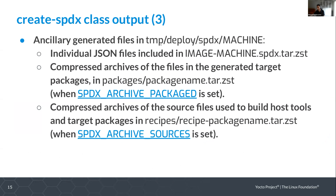There's also a second set of files generated in tmp/deploy/spdx/machine. Initially I thought these were the primary ones, but they're mostly intermediate or extra files. You get the individual JSON files included in the archive in the main directory, compressed archives of the files in the generated target packages if you specify SPDX_ARCHIVE_PACKAGED — one per package — and compressed archives of the source files if you specify SPDX_ARCHIVE_SOURCES, located under tmp/deploy/spdx/machine/recipes/recipe-package-name.